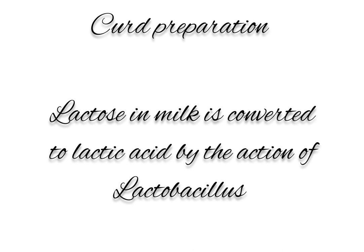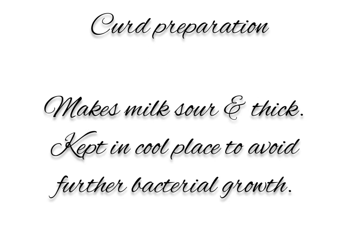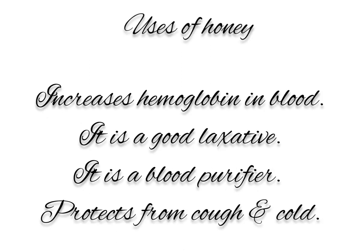How is curd made? Curd is made when milk sugar — lactose — is converted into lactic acid by the action of Lactobacillus, which is a bacterium. To make curd, we take some warm milk and add a small amount of existing curd. Lactobacillus starts multiplying rapidly and converts lactose into lactic acid, making the milk sour and thick — this is curd. Once curd is made, it is shifted to a cooler place to avoid further multiplication of bacteria. If left outside the fridge, further souring occurs and the curd becomes inedible.